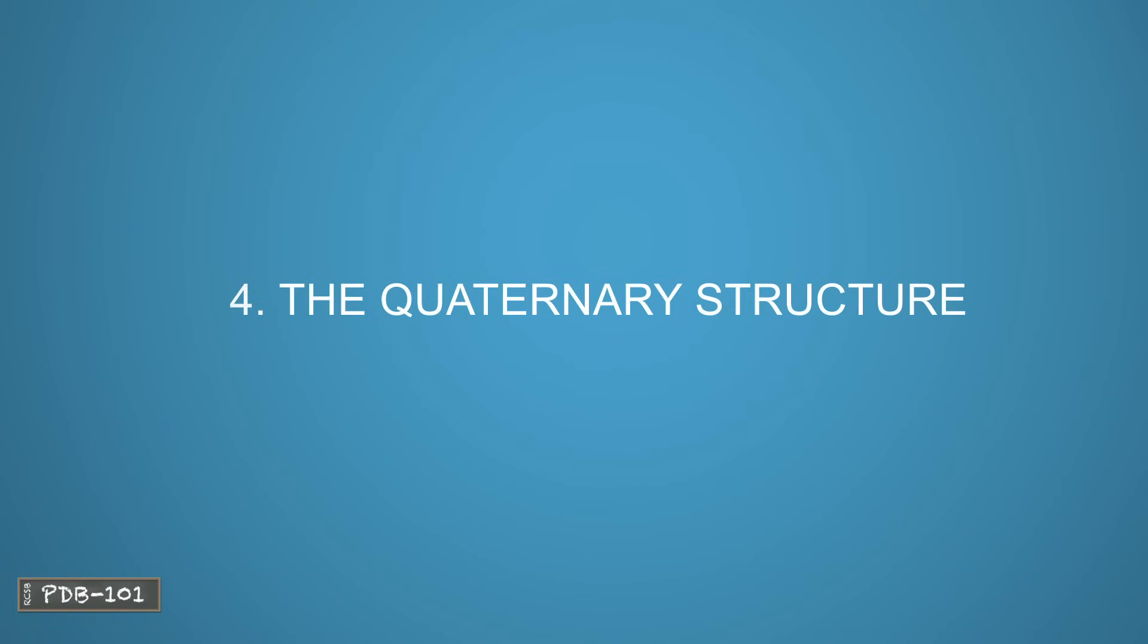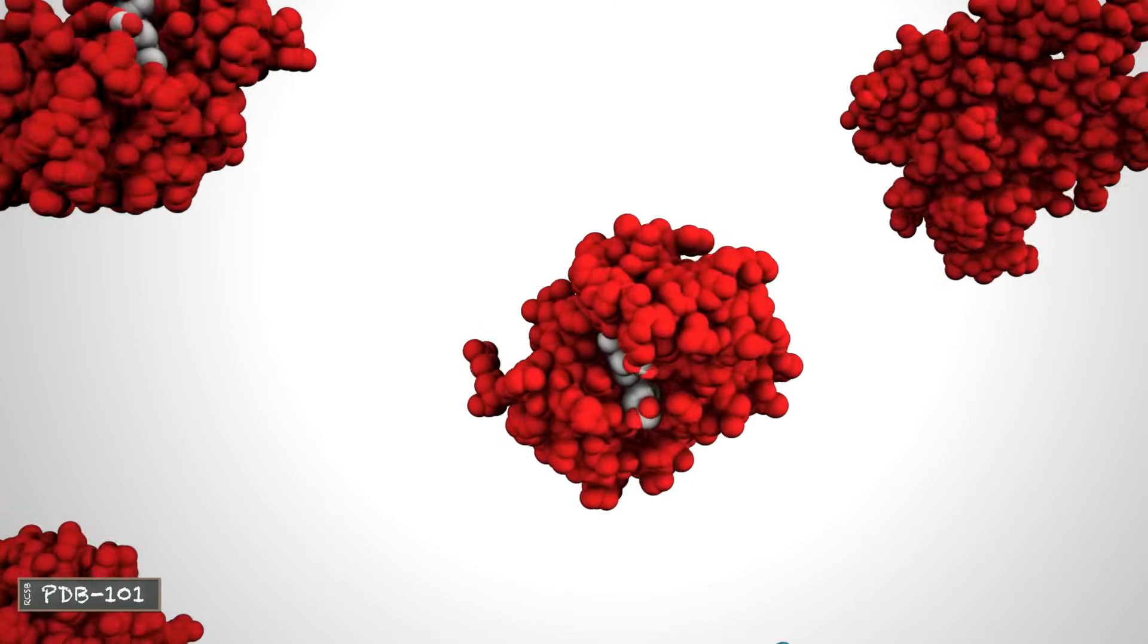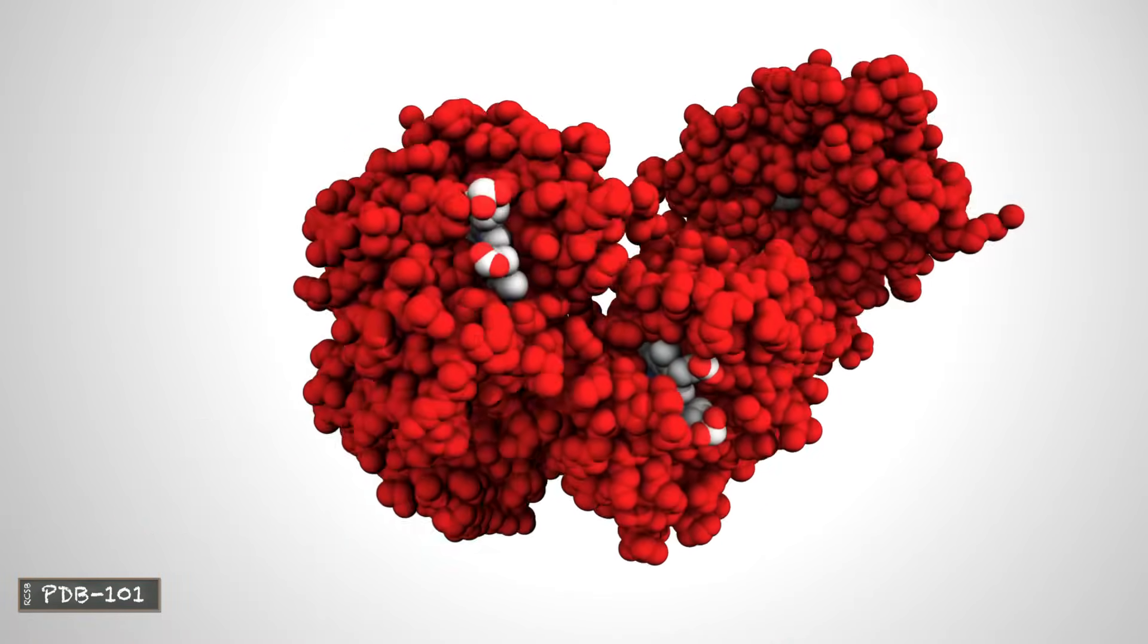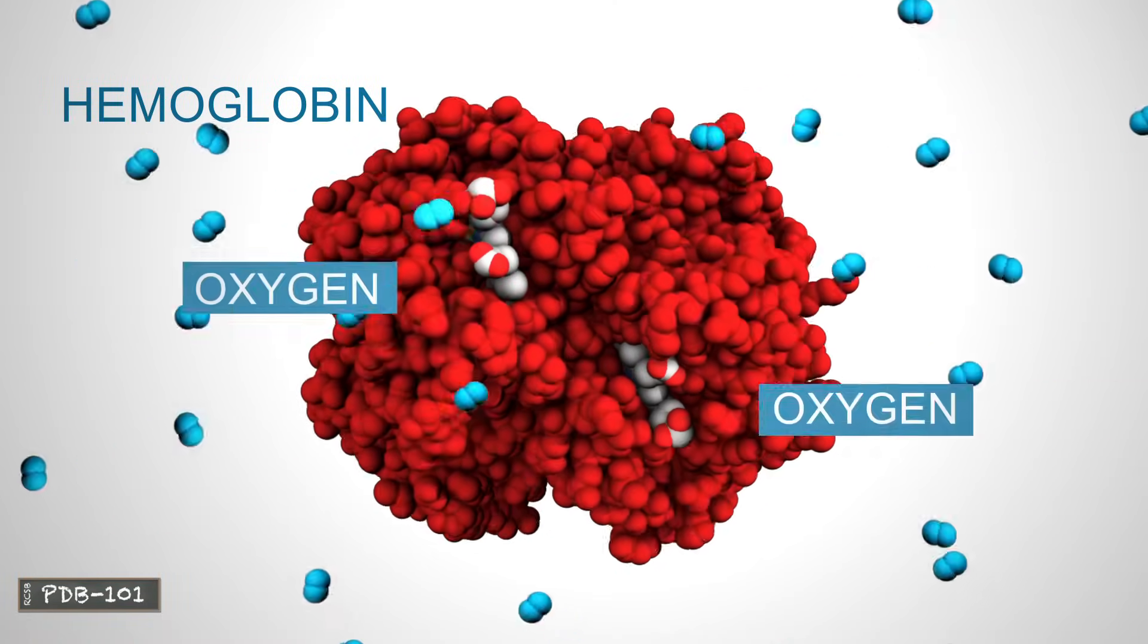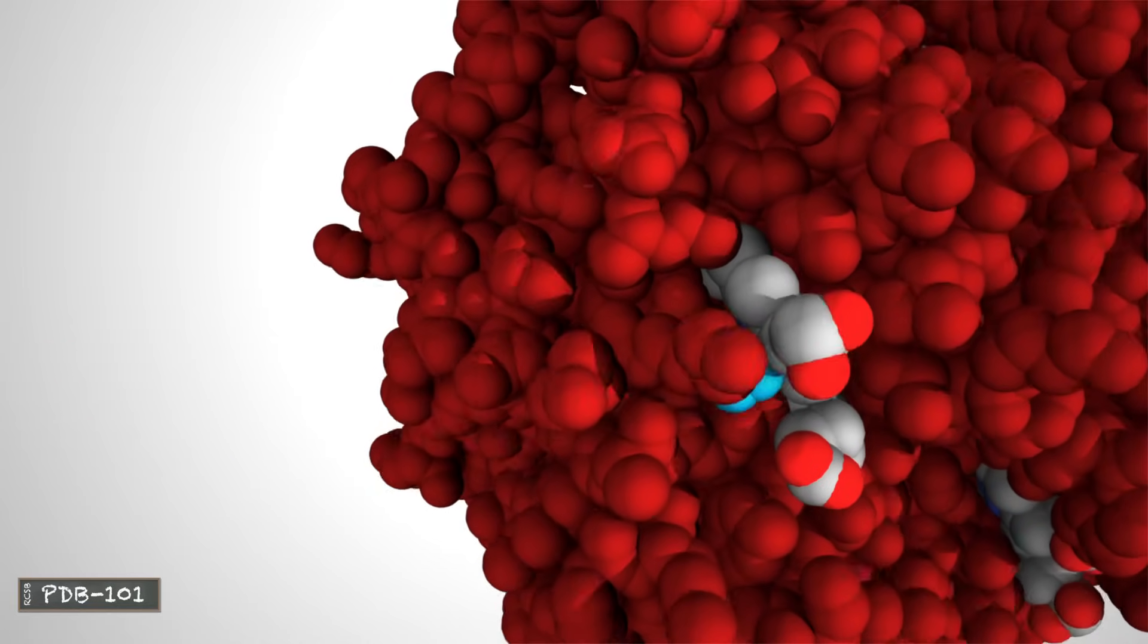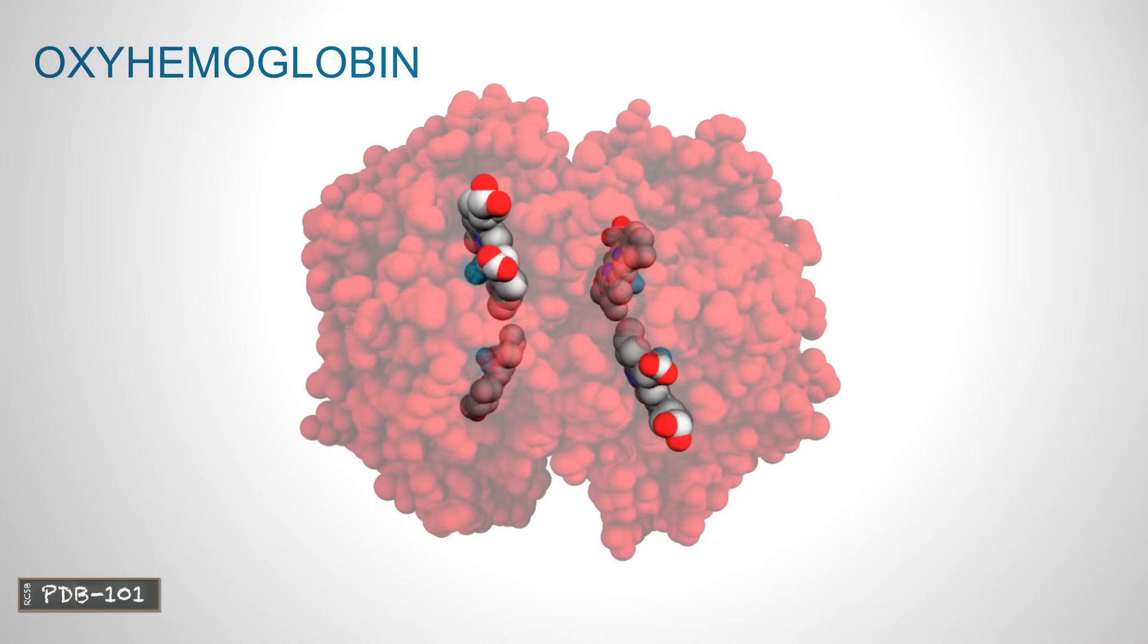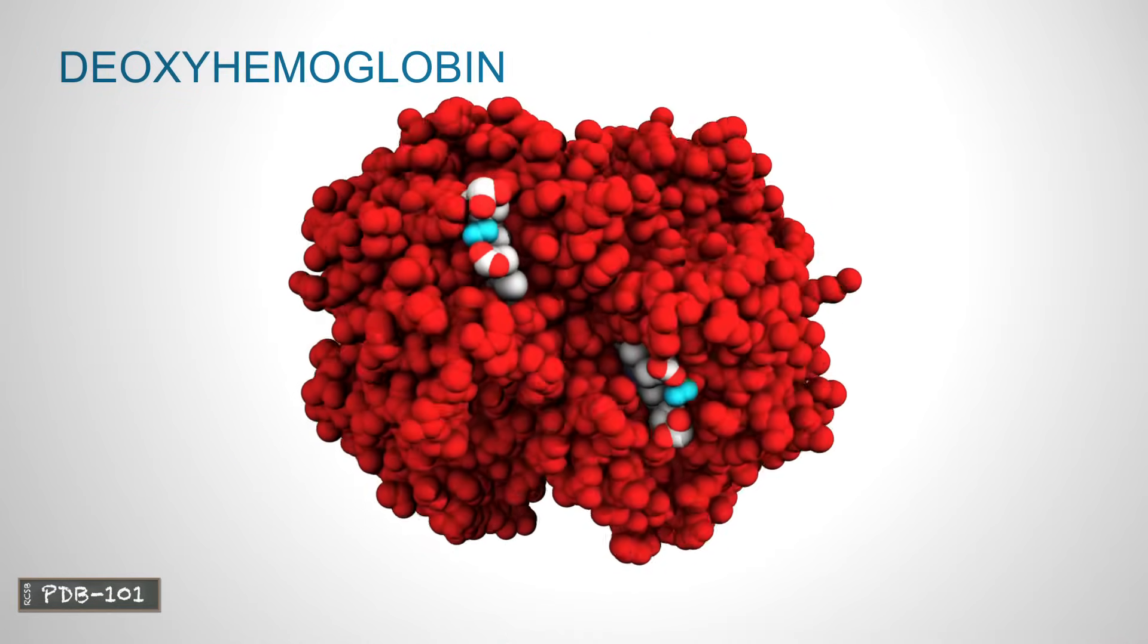In quaternary structure, two or more polypeptide chains can come together to form one functional molecule with several subunits. The four subunits of hemoglobin cooperate so the complex can more easily pick up oxygen in the lungs and release it in the body.